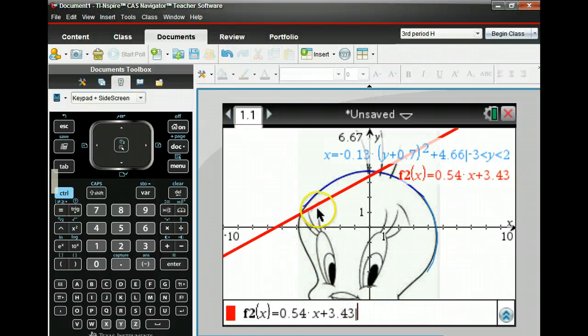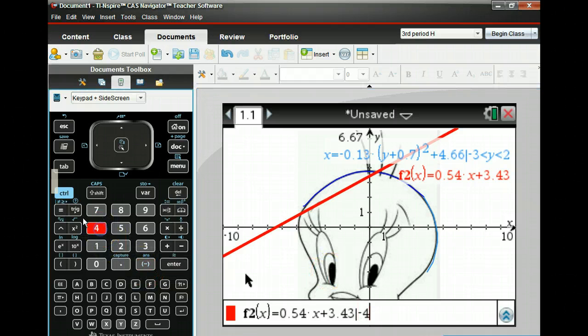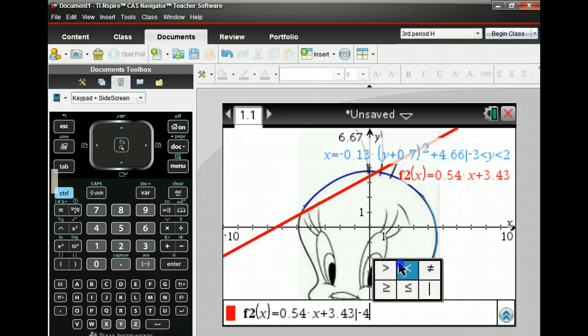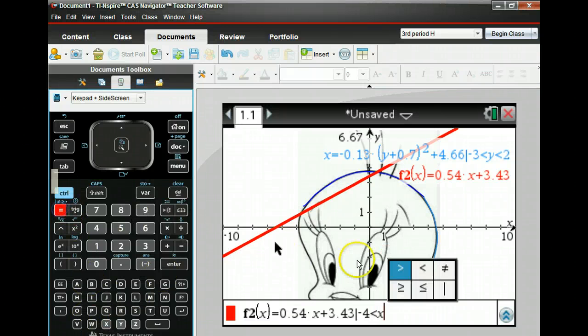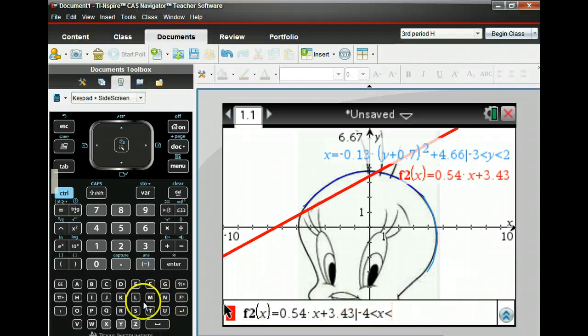I have to restrict the x value. It looks like it goes from one, two, three, four, negative four to negative three maybe. So negative four less than, you always start with a smaller one, less than x, less than negative three.